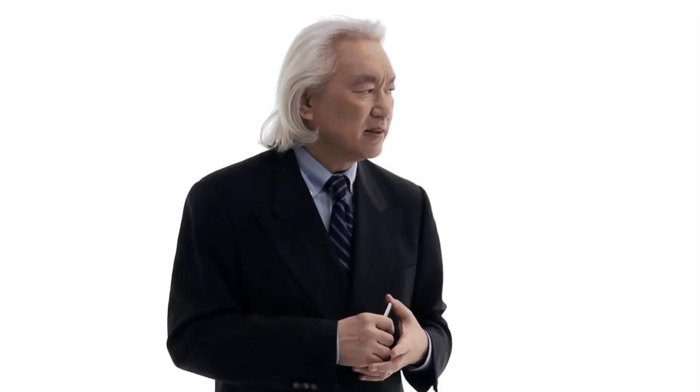Since string theory is a theory of everything, it's also a theory of time. And time machines are allowed in Einstein's equations. But to build one is extremely difficult. Far more energy is required than a simple DeLorean with plutonium.